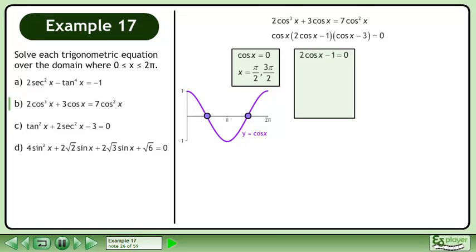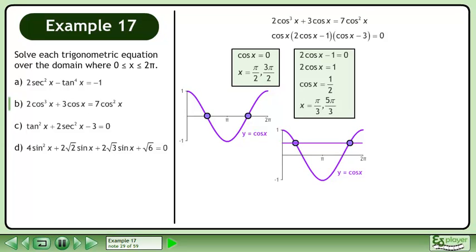Now solve 2cosx minus 1 equals 0. Add 1 to both sides of the equation, then divide both sides by 2. The solution is x equals π/3 and 5π/3.